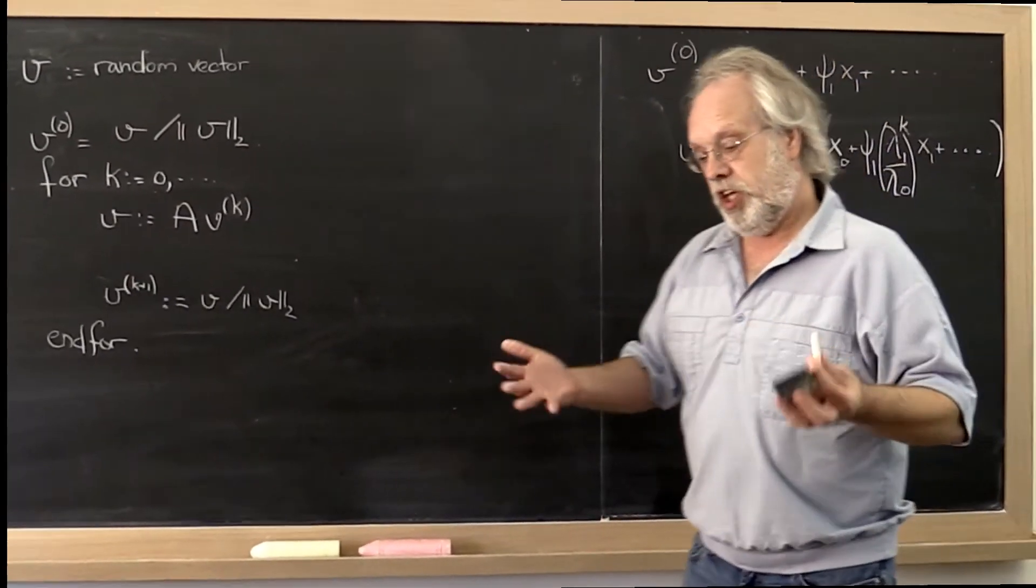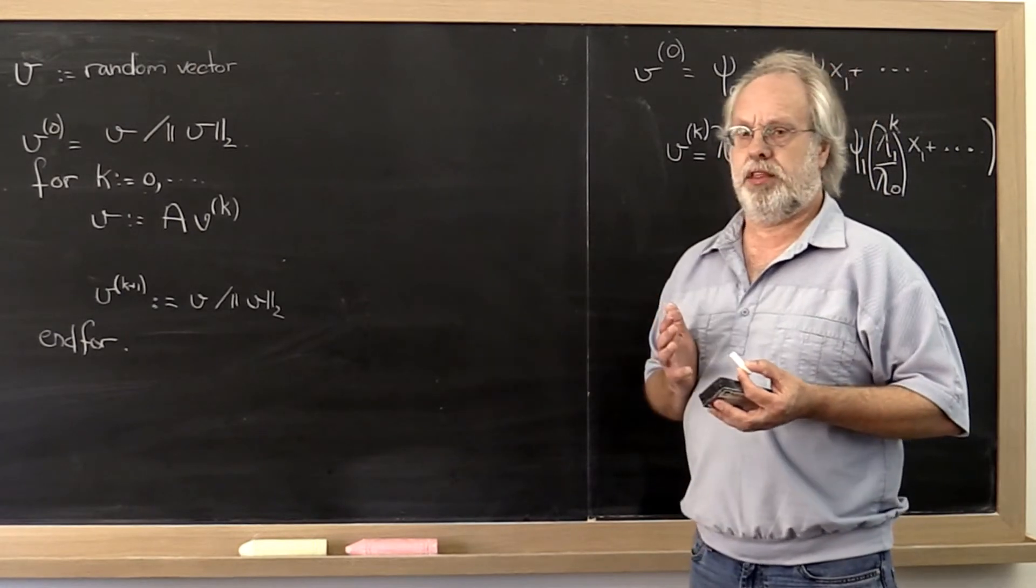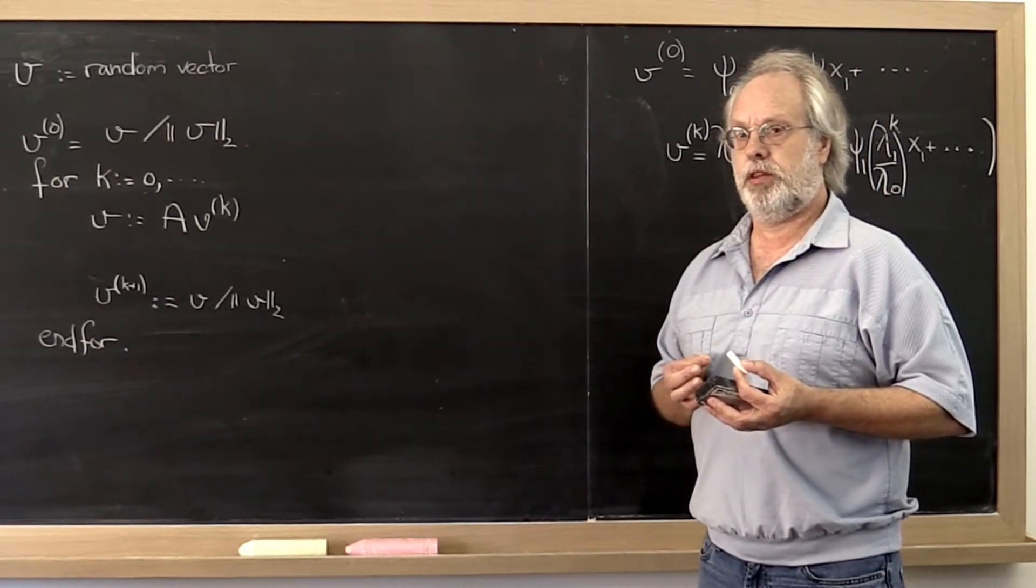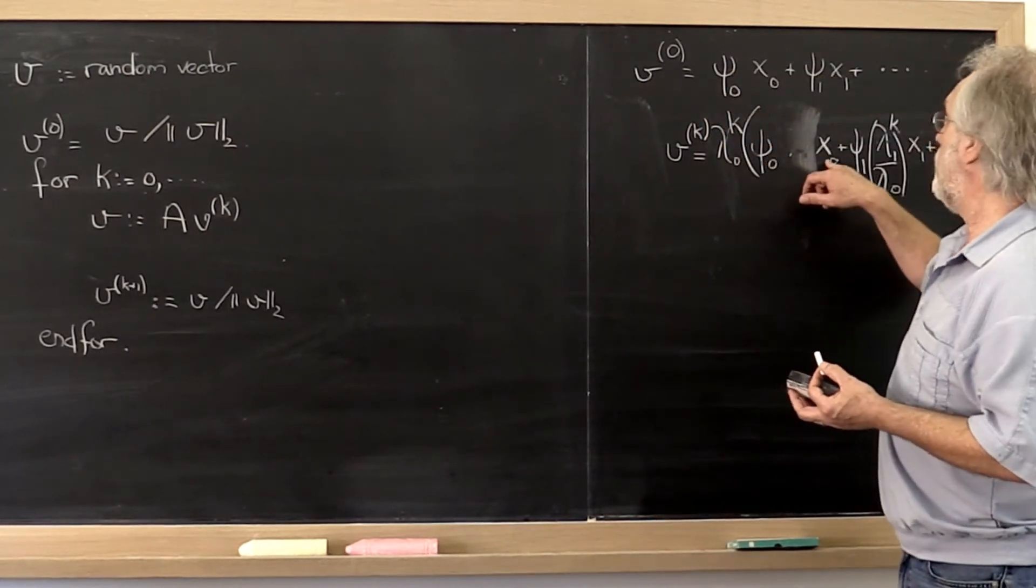So one thing we could do is we could say, we'll run the power method. We will find an eigenvector associated with the largest eigenvalue. We will call that vector that we find x0.